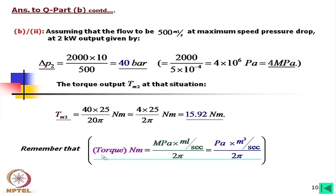Remember: torque in Newton meters = megapascals × milliliters per revolution ÷ (2π), because the 10⁻⁶ from megapascals to Pascals and the 10⁻⁶ from milliliters to cubic meters cancel each other out. It is better to remember this relation for calculations.